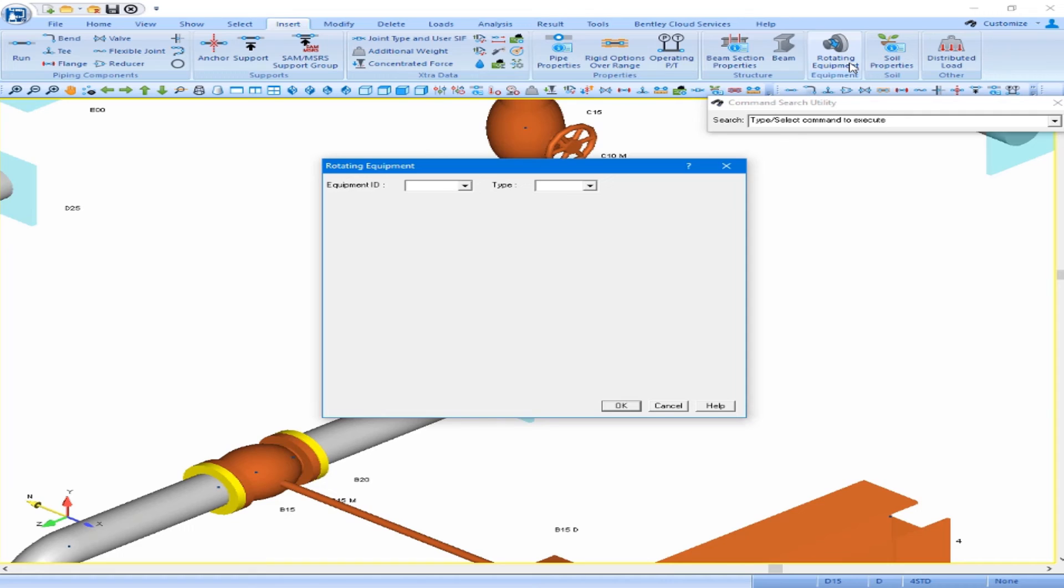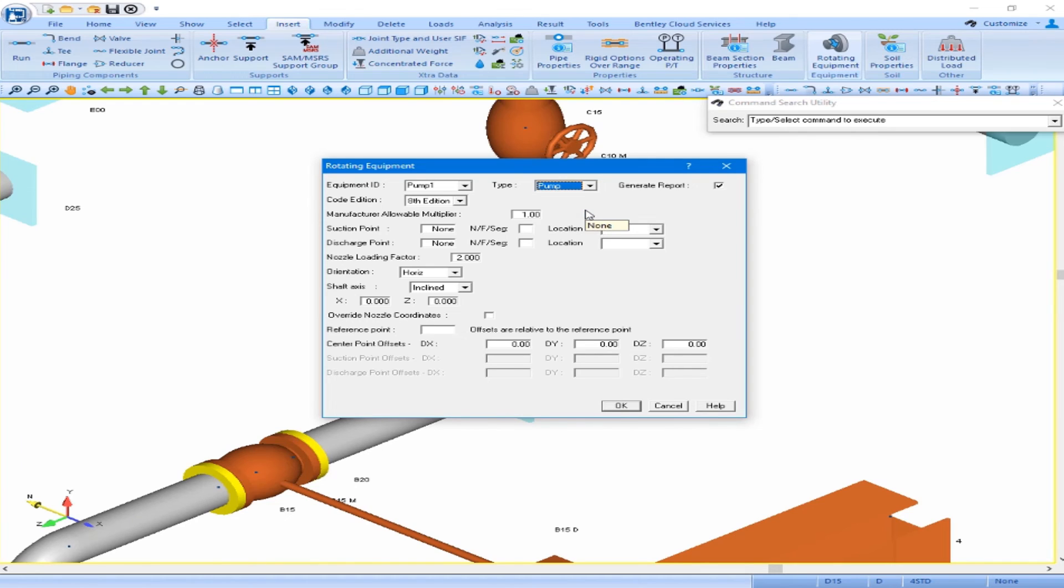We'll give this pump an equipment ID. We'll name it pump1 for simplicity and we'll select the type as pump. When we select that, we see the rest of the dialog box is now populated for inputs to define our pump. We do want to generate our report so we will leave that checked on which it is by default.